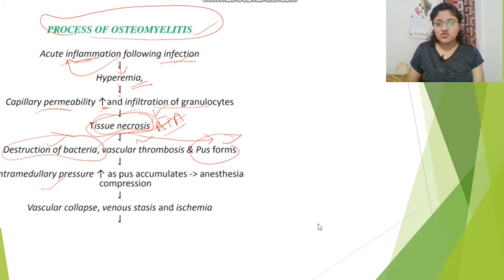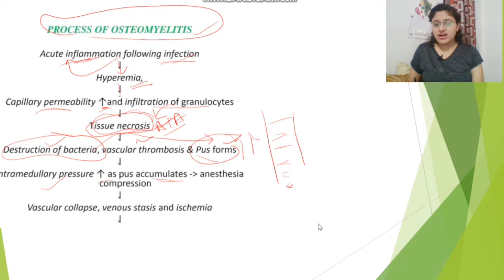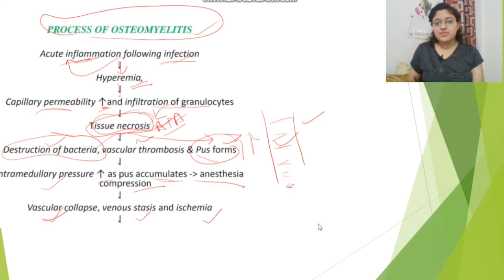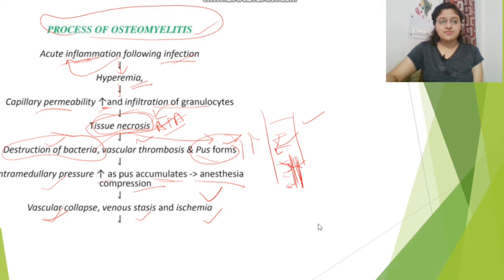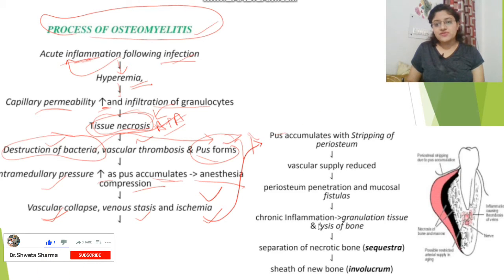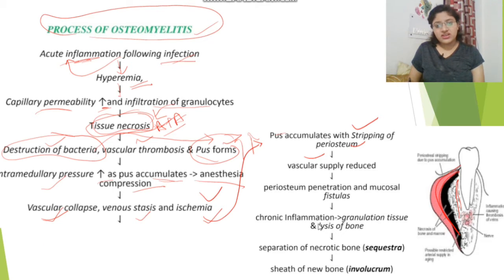After pus formation, intramedullary pressure increases as pus accumulates. The increased pressure causes anesthesia compression, pain, vascular collapse, venous stasis, and ischemia. Blood vessels collapse under the increased pressure. Subsequently, pus accumulates with stripping of the periosteum — the pus retracts the periosteum, vascular supply reduces, and the pus penetrates forming mucosal fistulas, which are communications between two lumens.